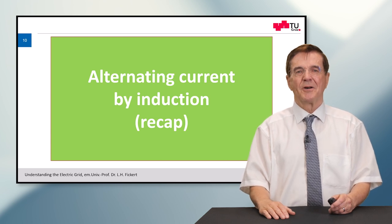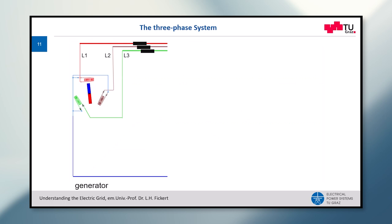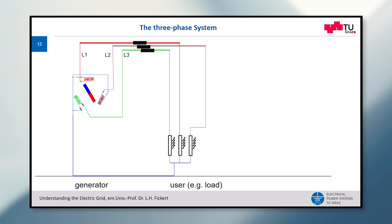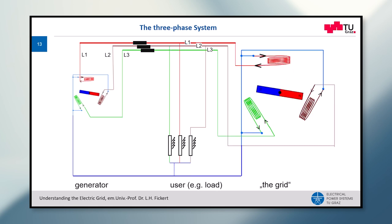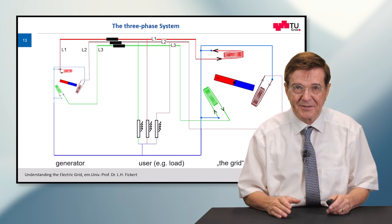First, a short recap on alternating current generation by induction. Maybe you can remember there is one generator rotating and inducing voltage in the phases one, two, three, and this voltage is led on to the consumers. If we have a full system, we have all the other remaining generators which behave exactly as the first generator.